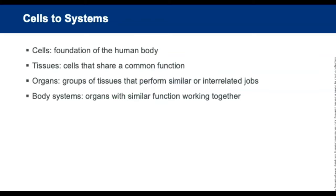From cells to systems: cells are the foundation of the human body. Cells that share a common function form tissue. Groups of tissues that perform similar or interrelated jobs form organs. Organs with similar functions work together to comprise a body system.